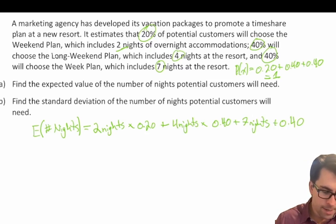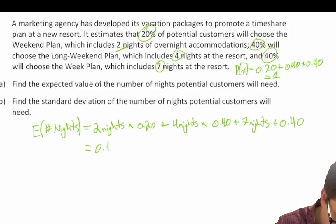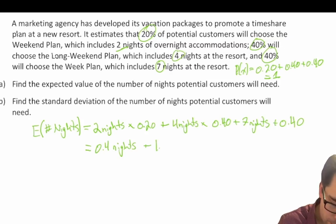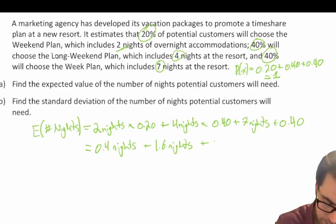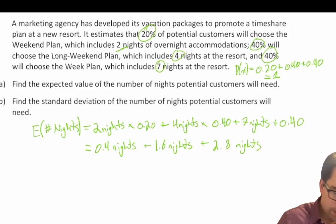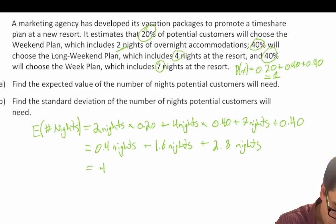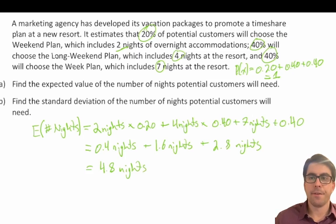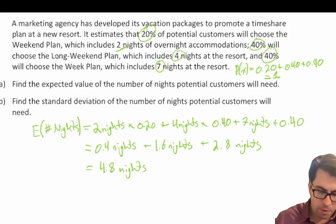So 2 times 0.2 equals 0.4, plus 4 times 0.4 equals 1.6 nights, plus 7 times 0.4 gives us 2.8 nights. Summing these up: 0.4 plus 1.6 is 2, plus 2.8 gives us 4.8 nights. So the expected value of the number of nights customers will need is 4.8 nights.